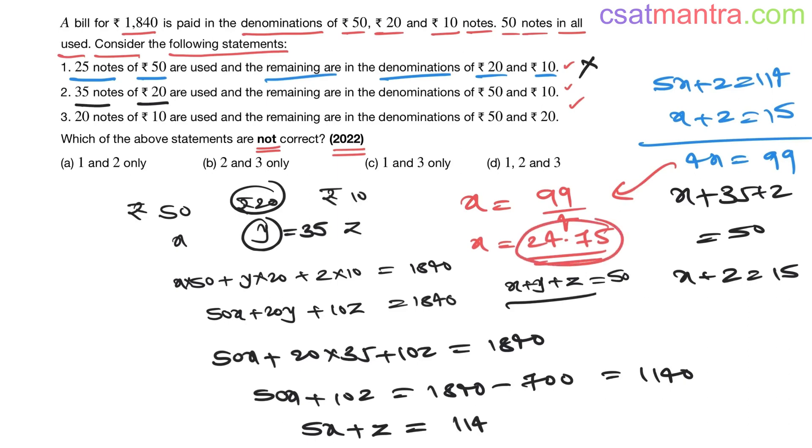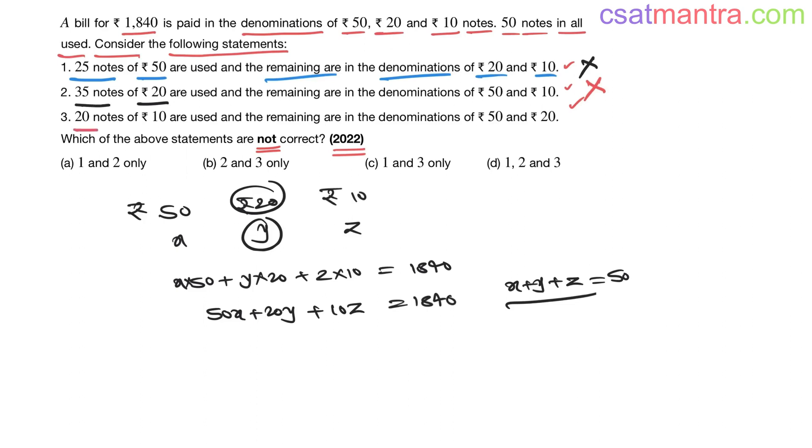x equals 99 by 4, which is 24.75. You cannot have number of notes as a decimal number, so this is also incorrect. Now statement 3: 20 notes of ₹10 are used. z is 20, and remaining are in the denominations of ₹50 and ₹20. So 50x + 20y + 10 into 20 = 1840.